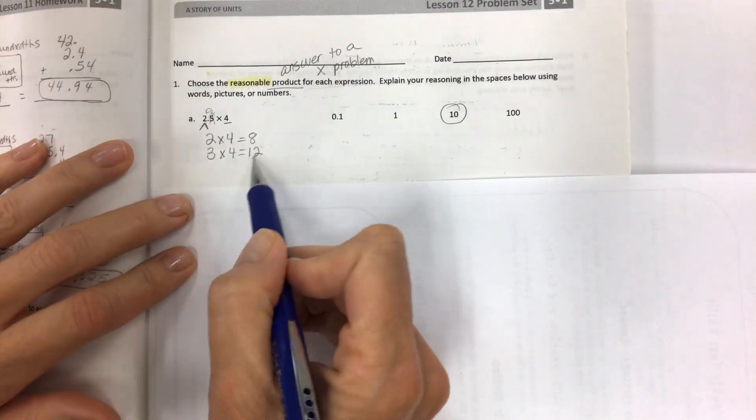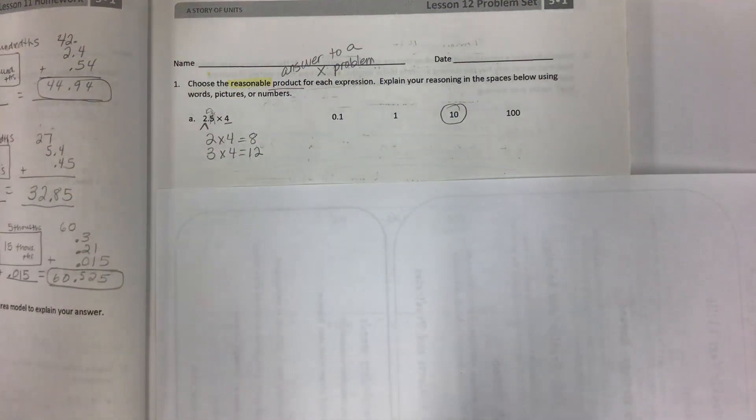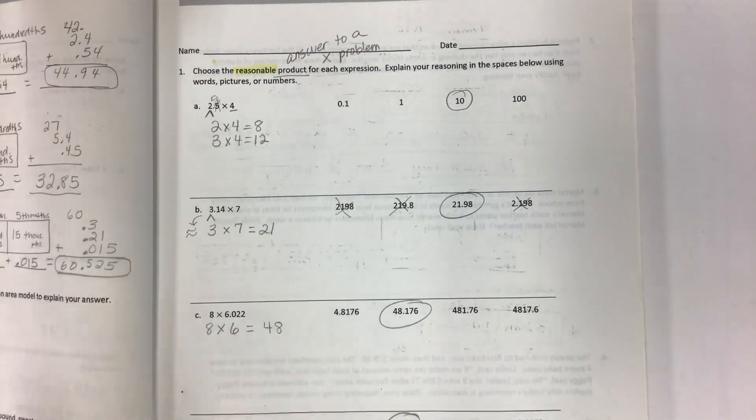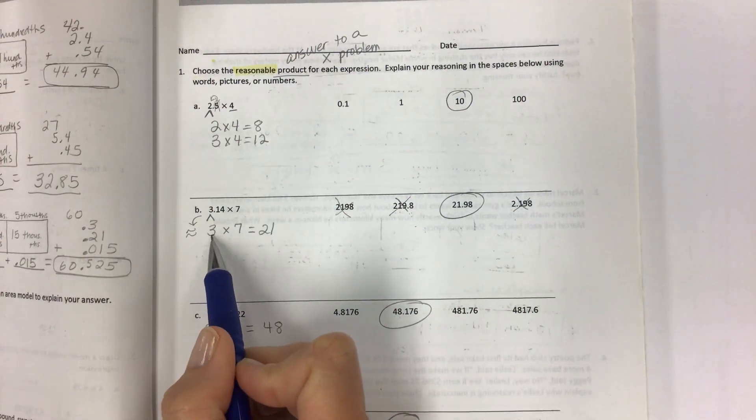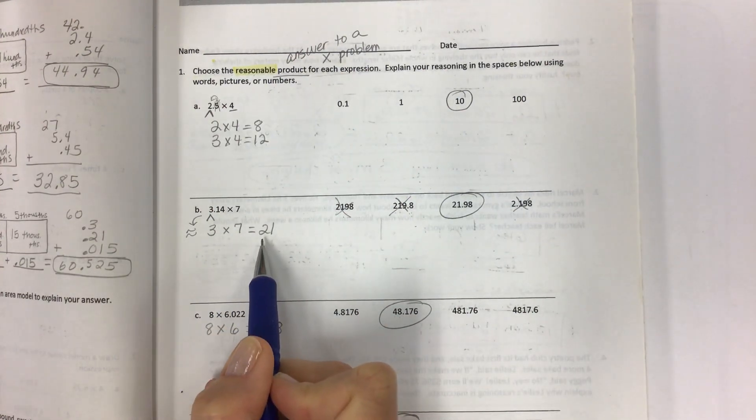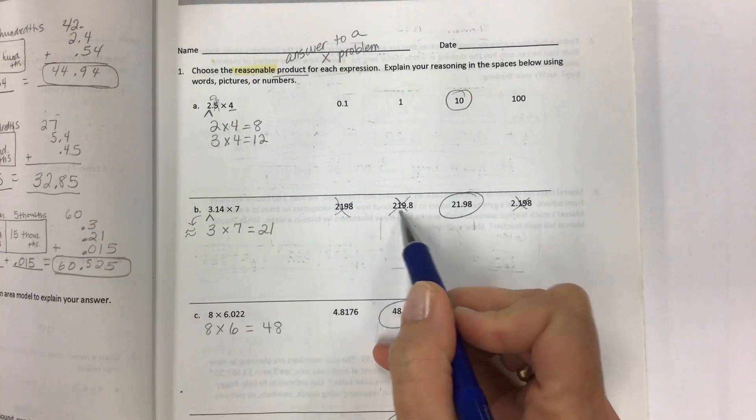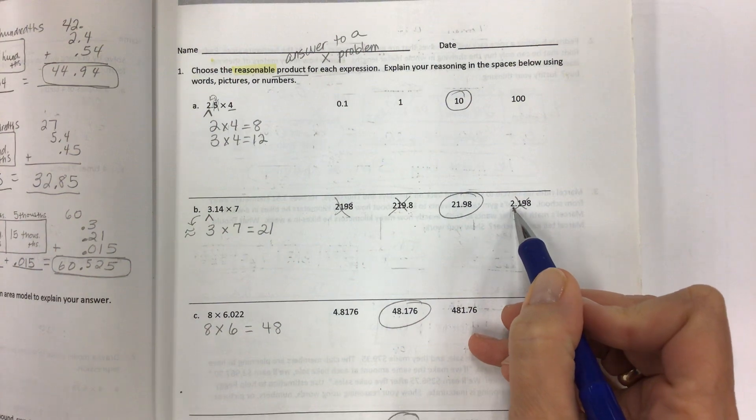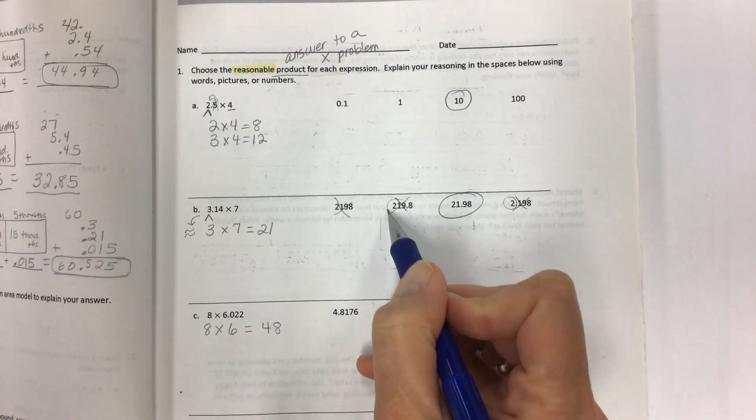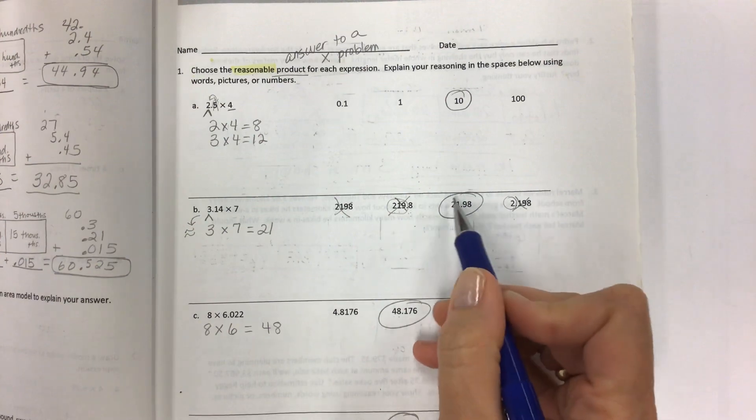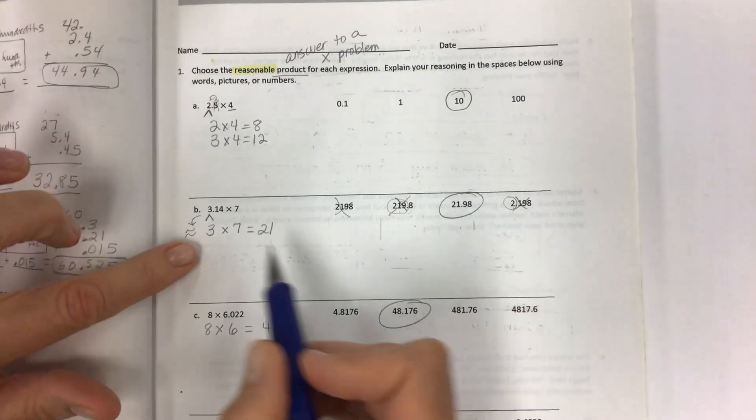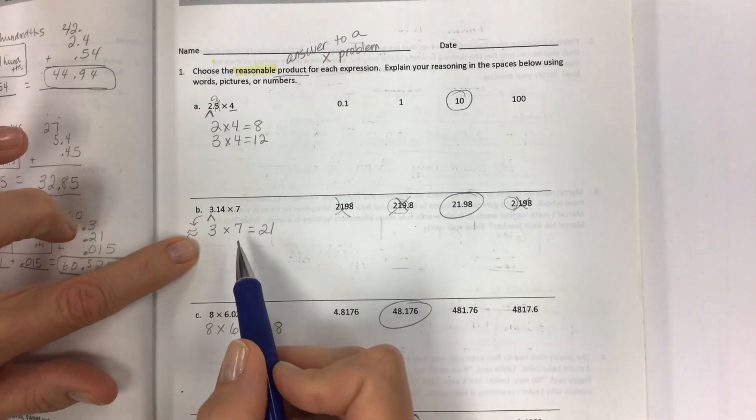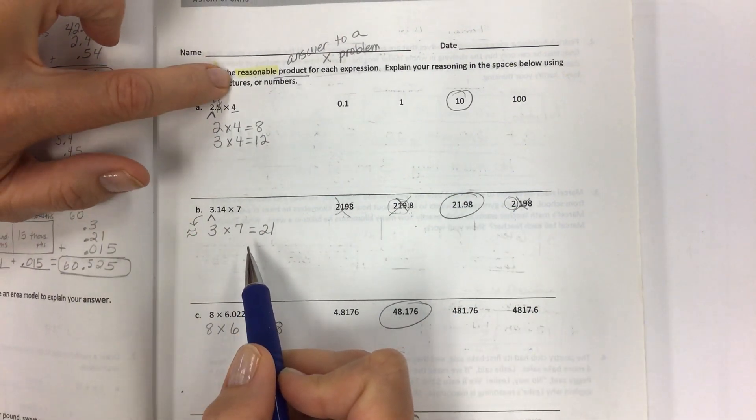And again, they don't care about what the actual answer is, we're saying let's just estimate today. So in the same way, you've got roughly 3 times 7, which is about 21. Now this is way too big, and this is huge, and this is super tiny, only having 2. So pay really close attention to what the whole number is. This is the obvious answer. You don't have to do the actual standard algorithm to get this, you just have to estimate by choosing the reasonable product.